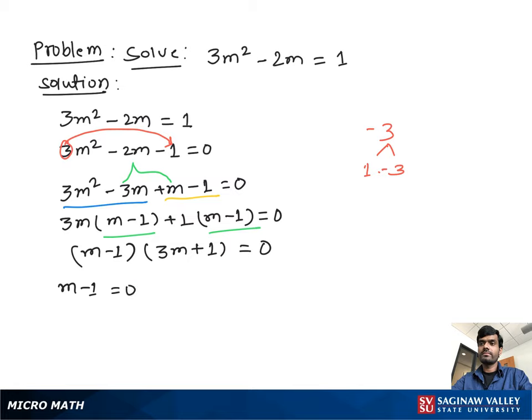m minus 1 equal to 0, or 3m plus 1 equal to 0. Now if we add 1 to both sides we get m equal to positive 1.